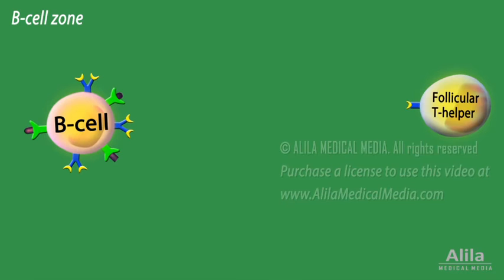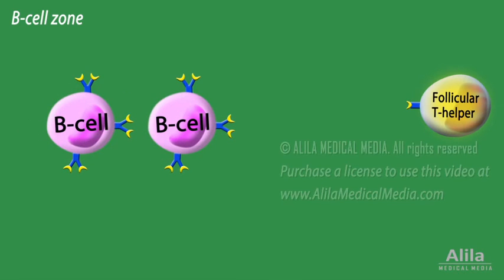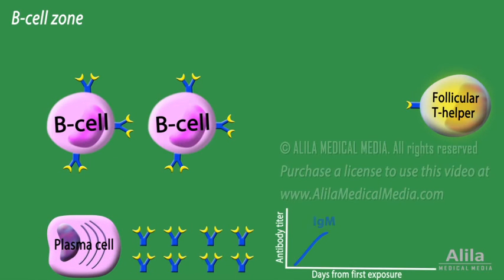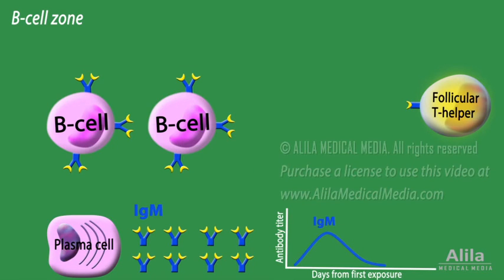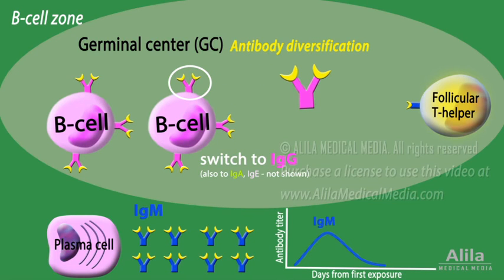Activated B cells undergo first rounds of proliferation and differentiation, giving rise to the first batch of plasma cells producing antibodies — mainly of IgM class — and a group of cells that are committed to become memory B cells. The latter undergo antibody class switching and form a so-called germinal center, where they go through cycles of multiplication and hypermutation in the immunoglobulin gene.